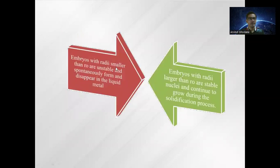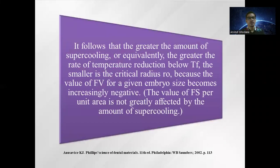Embryos with radii smaller than ro are unstable and spontaneously form and disappear in the liquid metal. Embryos with radii larger than ro are stable nuclei and continue to grow during solidification. The greater the amount of supercooling, the smaller the critical radius ro, because the value of Fv for a given embryo size becomes increasingly negative, while Fs per unit area is not greatly affected by the amount of supercooling.